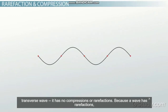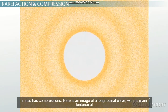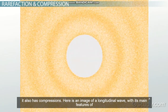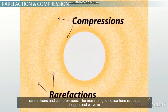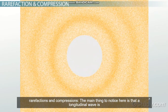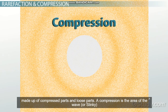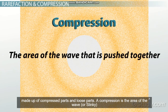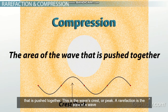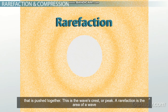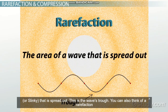Because a wave has rarefactions, it also has compressions. Here's an image of a longitudinal wave with its main features of rarefactions and compressions. The main thing to note is that a longitudinal wave is made up of compressed parts and loose parts. A compression is the area of the wave, or slinky, that is pushed together — this is the wave's crest, or peak. A rarefaction is an area of the wave, or slinky, that is spread out — this is the wave's trough.